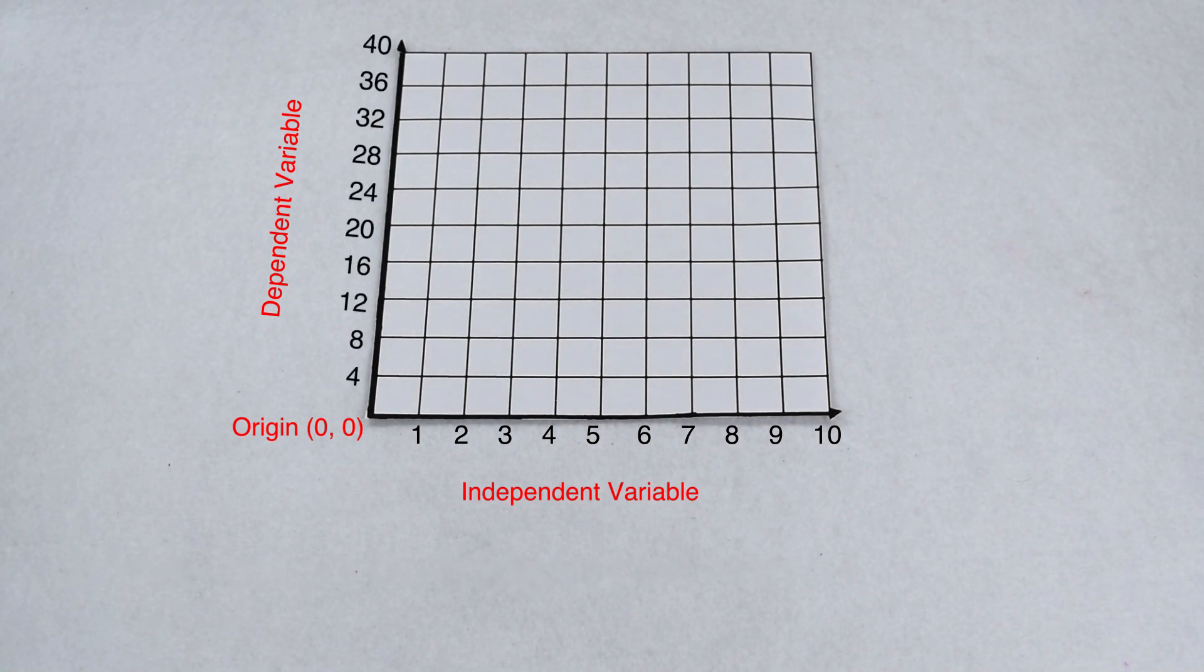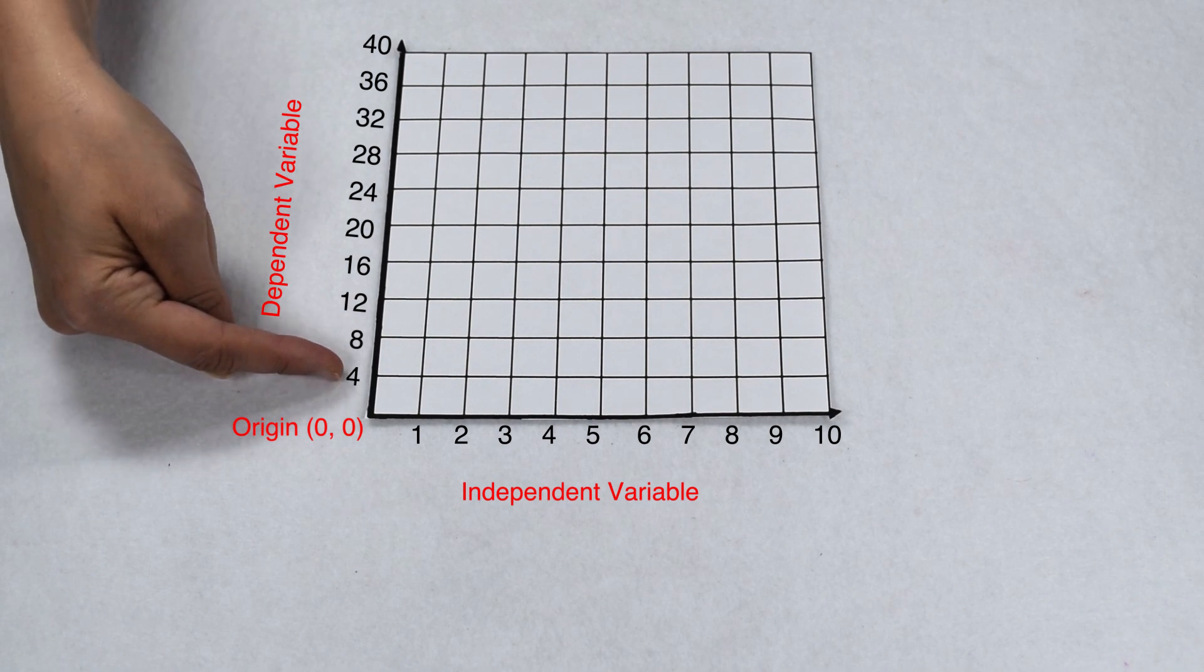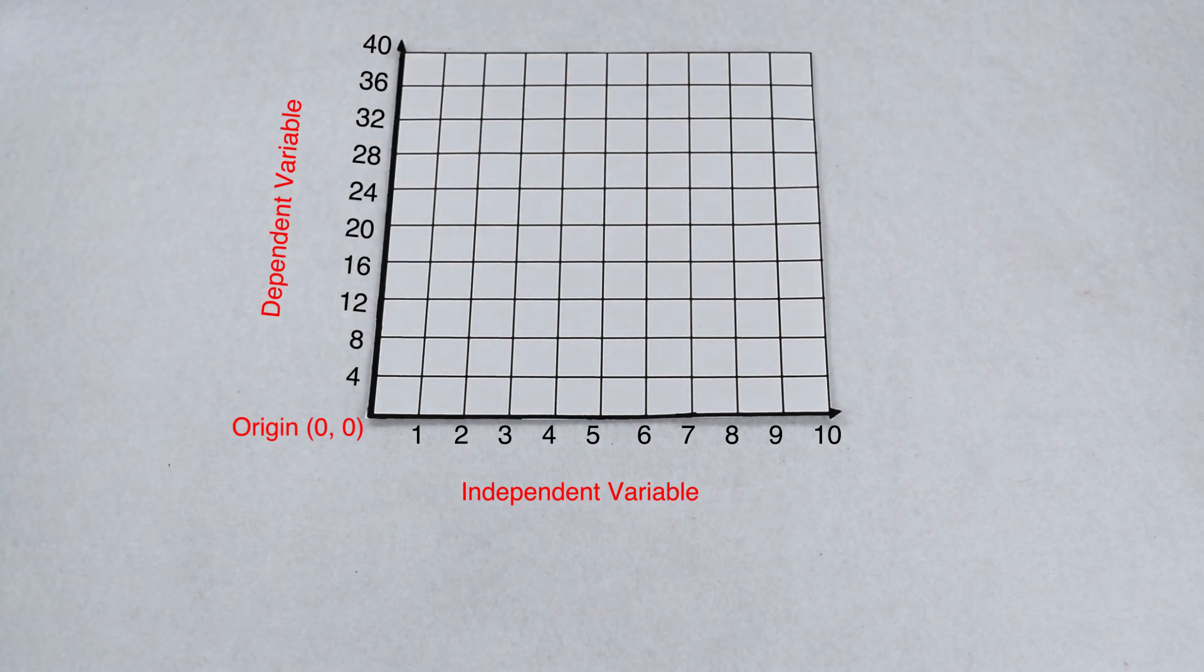If we look at our y axis, we can see that we count by fours: four, eight, twelve, sixteen. So we would say that our y axis has a scale of four.